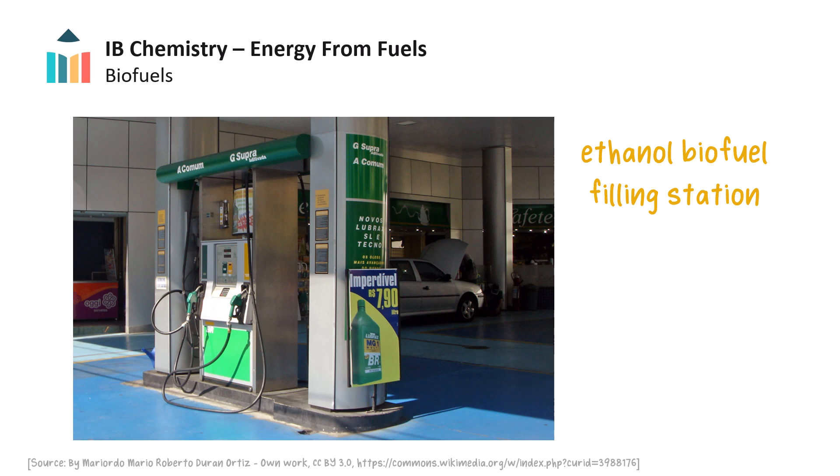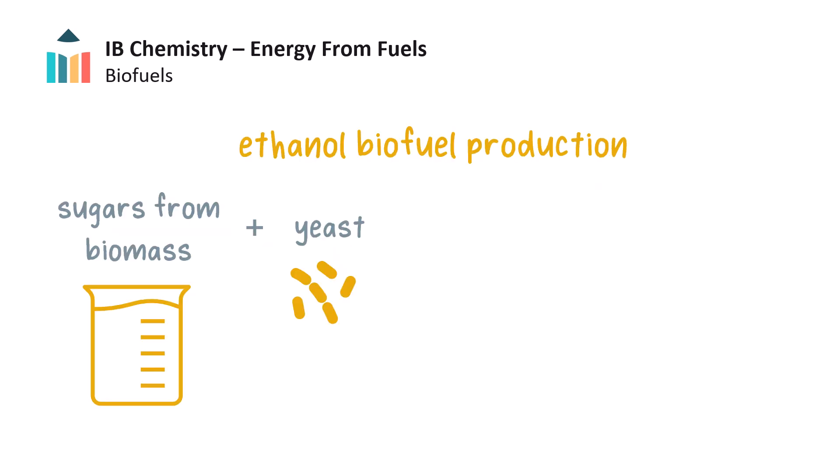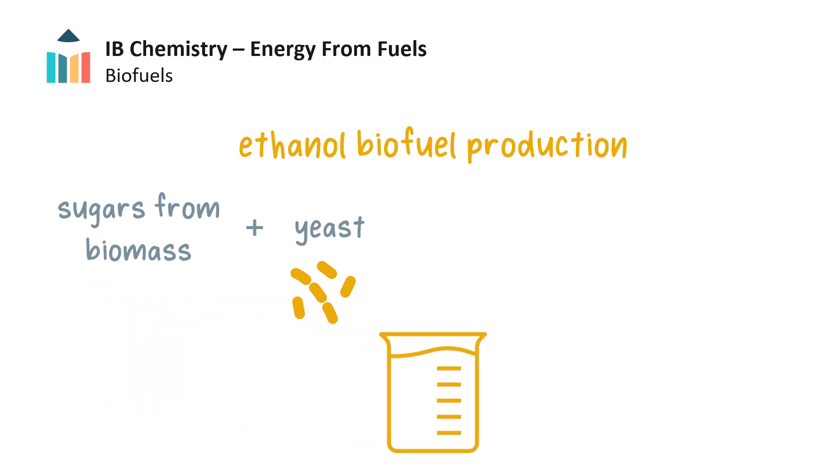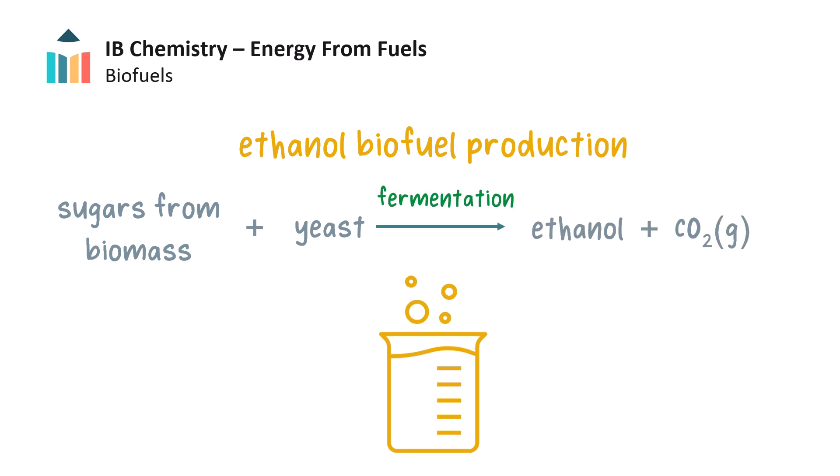Ethanol, made from plant material, has been used as a biofuel additive to regular vehicle fuel such as gasoline, and some vehicles run on ethanol alone. One common way in which ethanol biofuel is made is by fermenting solutions of sugars from plants using yeast. The process occurs at about 25 to 35 degrees Celsius and is anaerobic, meaning it does not need oxygen to occur. The products of fermentation are ethanol and carbon dioxide gas.